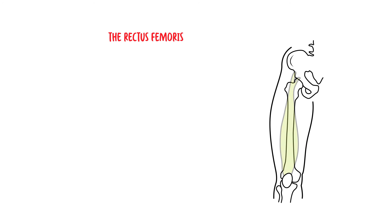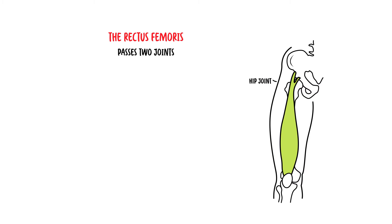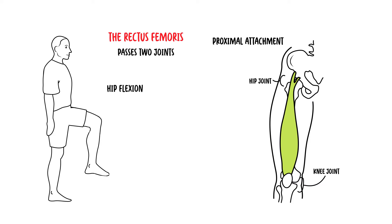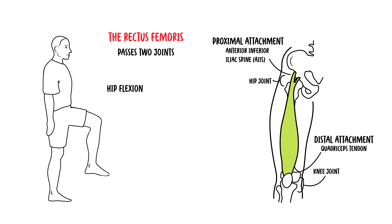The rectus femoris is the only muscle of the four that passes two joints: the hip and knee joint. The rectus femoris also helps perform hip flexion, because it originates at the anterior inferior iliac spine and ilium, superior to the acetabulum, and then attaches all the way down to form the quadriceps tendon.